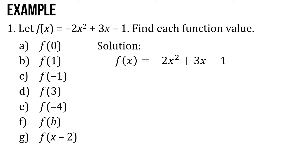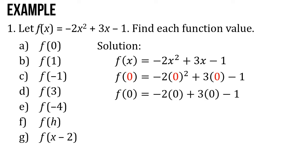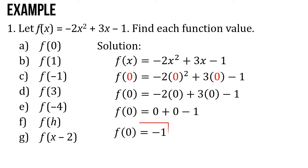For letter A, let us substitute 0. So we're going to have f of 0 equals negative 2 times 0 squared plus 3 times 0 minus 1. Then just continue solving: f of 0 equals negative 2 times 0, because 0 squared is 0, plus 3 times 0 minus 1. So f of 0 equals 0 plus 0 minus 1, which gives f of 0 equals negative 1. Do not forget to box your final answer.